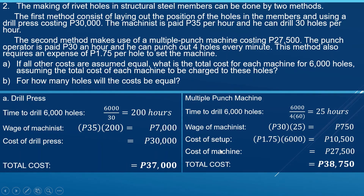For the multiple punch machine, the time to drill 6,000 holes is 6,000 divided by (4 times 60), since 4 holes are punched every minute. That equals 25 hours. The operator's wage is 30 pesos per hour times 25 hours, equaling 750 pesos. The setup cost is 1.75 pesos per hole times 6,000 holes, equaling 10,500 pesos. Adding the machine cost of 27,500 pesos, the total cost is 38,750 pesos.